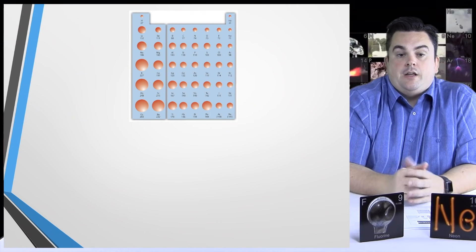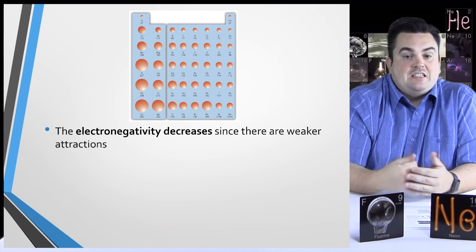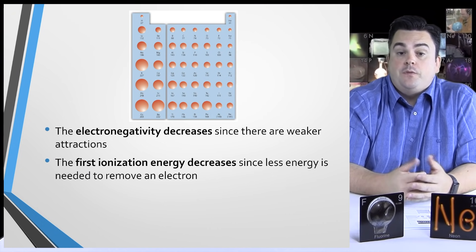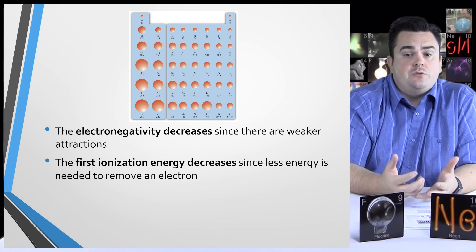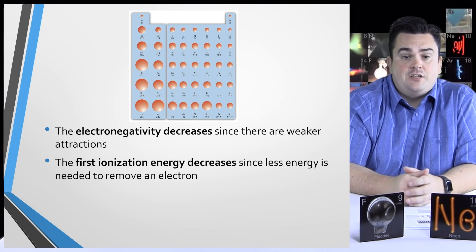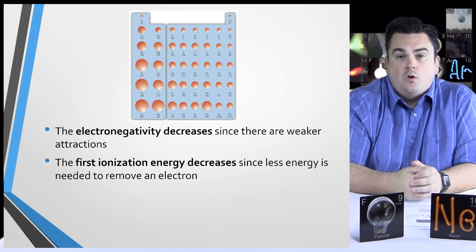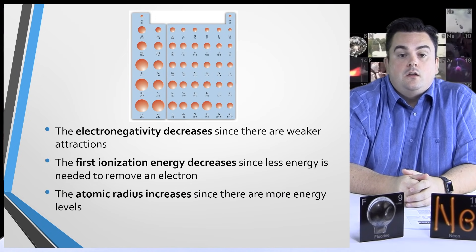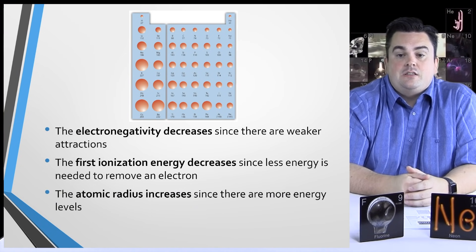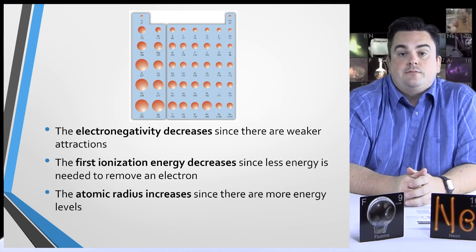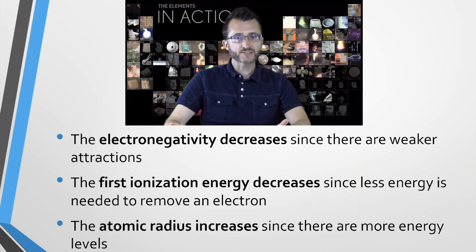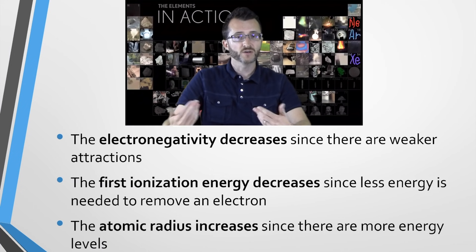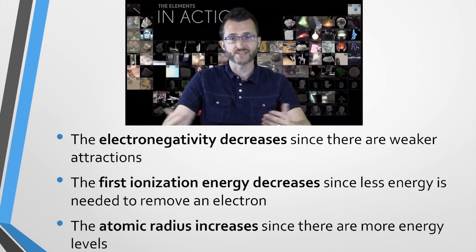So considering any group: electronegativity decreases since there are weaker attractions; first ionization energy also decreases since less energy is needed to remove an electron; and the atomic radius increases since there are more energy levels. Notice how electronegativity and first ionization energy always follow the same trend, whereas atomic radius follows the opposite trend.